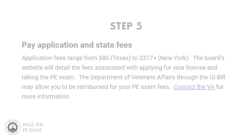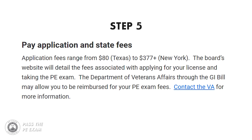Step five: pay application and state fees. Application fees range from $80 in Texas to $377 or more in New York. The board's website will detail the fees associated with applying for your license and taking the PE exam. The Department of Veterans Affairs through the GI Bill may allow you to be reimbursed for your PE exam fees — contact the VA for more information.